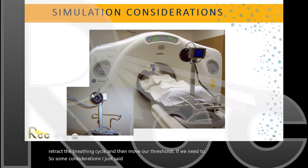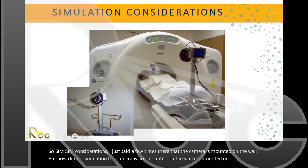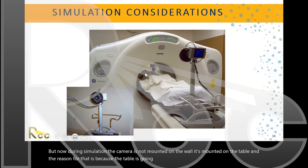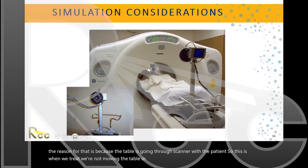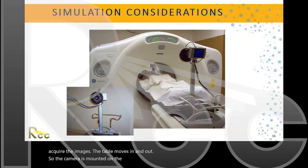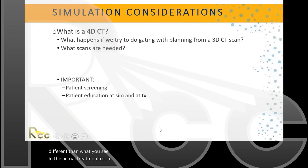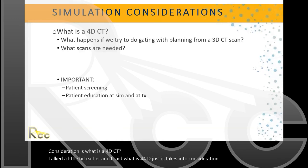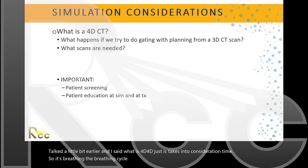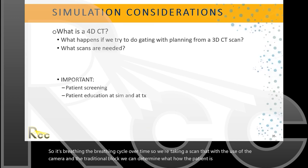During simulation, the camera is mounted on the table rather than on the wall, because the table moves in and out through the scanner with the patient. During treatment we're not moving the table in and out, but during simulation we are moving the table to acquire images. This is a key difference between what you see in the treatment room and what you see at simulation.